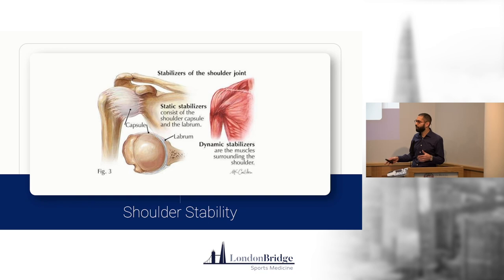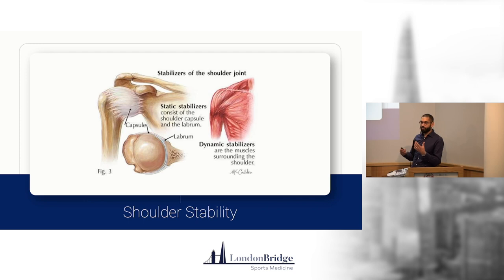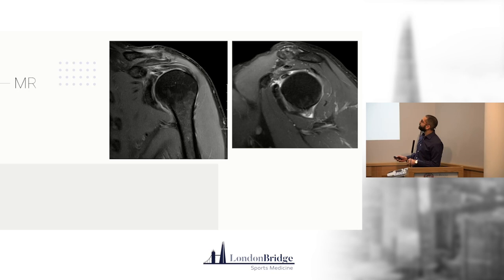Shoulder stability — remember there are lots of structures stabilizing the shoulder joint. Break them into primary static stabilizers and dynamic stabilizers. Static stabilizers are the shape of the joint, the labrum, and the capsule — which is not one blended sheet, but has lots of thickenings forming different ligaments. Dynamic stabilizers are the muscles, including the rotator cuff and everything we've spoken about.